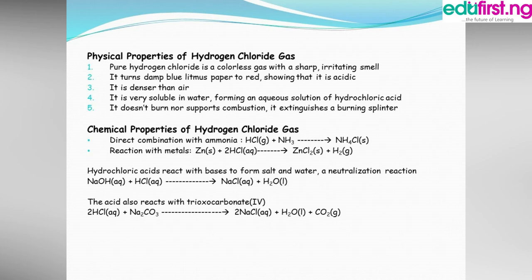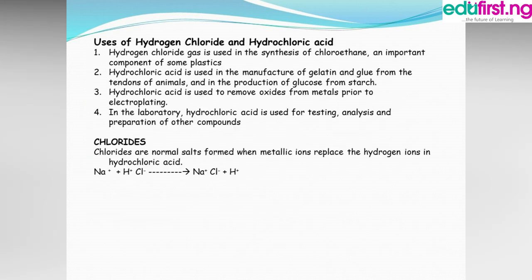Chemical properties of hydrogen chloride gas: It reacts with ammonia to give ammonium chloride. It also reacts with metals — for example, zinc reacts with hydrogen chloride to give zinc chloride and liberate hydrogen gas. Hydrochloric acid reacts with bases to form salt and water in a neutralization reaction — sodium hydroxide with hydrochloric acid gives sodium chloride and water. The acid also reacts with sodium carbonate to give sodium chloride, water, and CO₂.